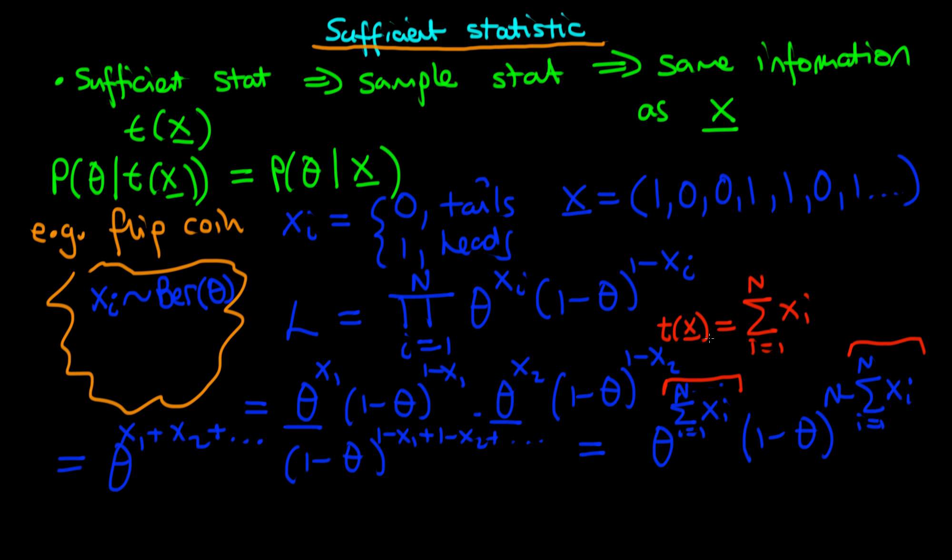And so t of x is a sufficient statistic. If we wanted to, we could sort of go one step further and we could say, well, what about the inferences that we obtain? So we could form the log likelihood, so the log likelihood, which is just equal to t times log of theta minus n minus t times log of 1 minus theta.